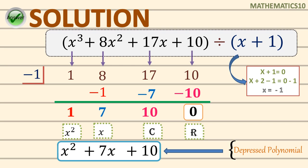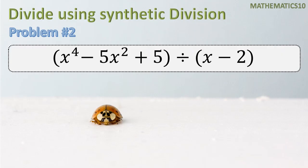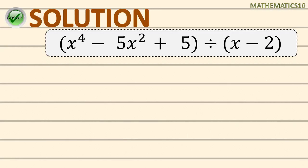Since our remainder is 0, x squared plus 7x plus 10 is also our quotient. But take note: if you still have a remainder, then x squared plus 7x plus 10 would not yet be the final quotient, but rather a depressed polynomial only. Now let's have our second example: x raised to the 4th power minus 5x squared plus 5 divided by x minus 2.